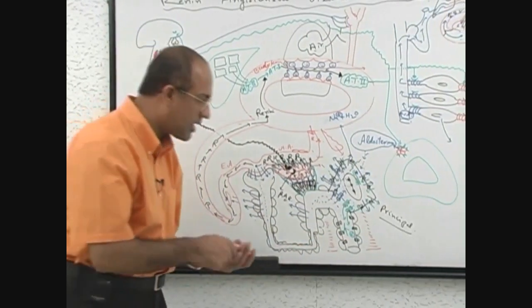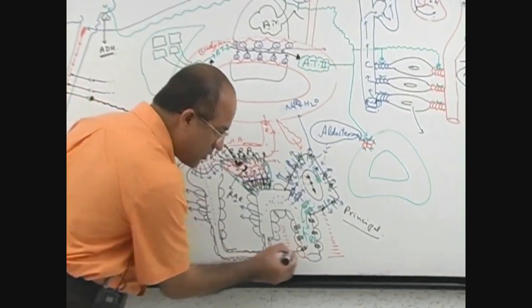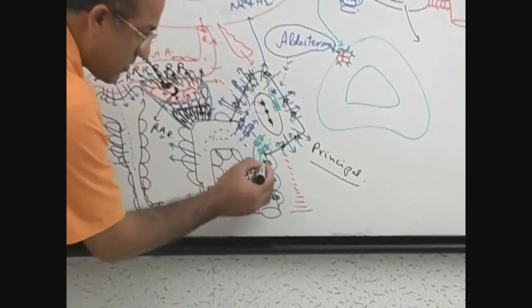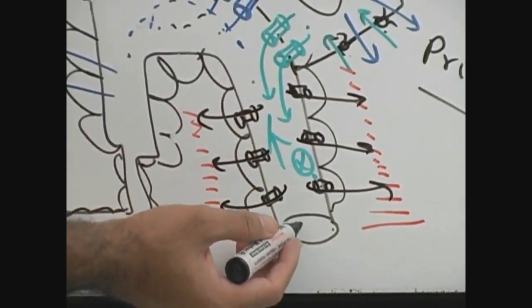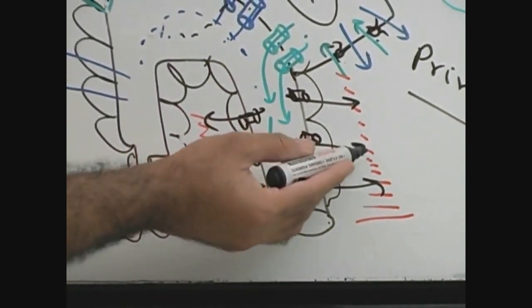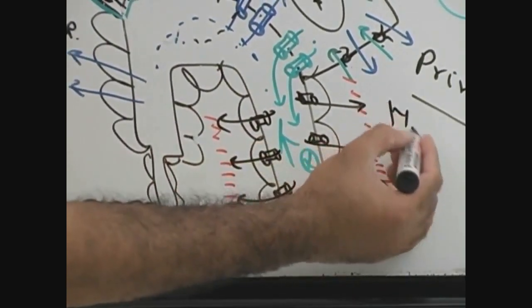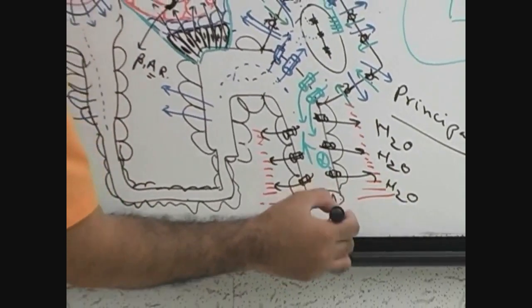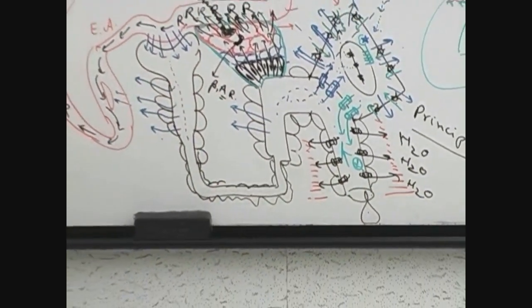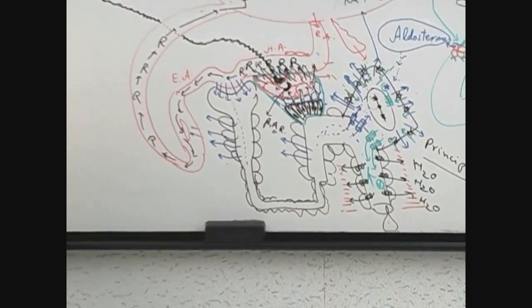Water will move from the hyposmolar area, it will be pulled to the hyperosmolar area. So water will rush from the last part of the nephron, from the lumen, water will rush through the cells to the interstitium. So there will be increased water reabsorption so that water should not be lost into urine.